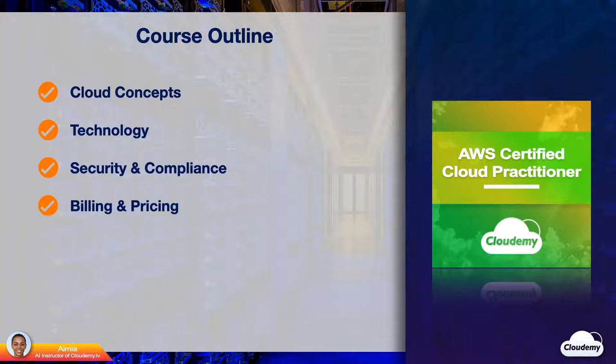In Technology, we will explore some core AWS services, such as IAM, EC2, VPC, S3, EBS, Elastic Load Balancing, Route 53, RDS, and CloudFront.